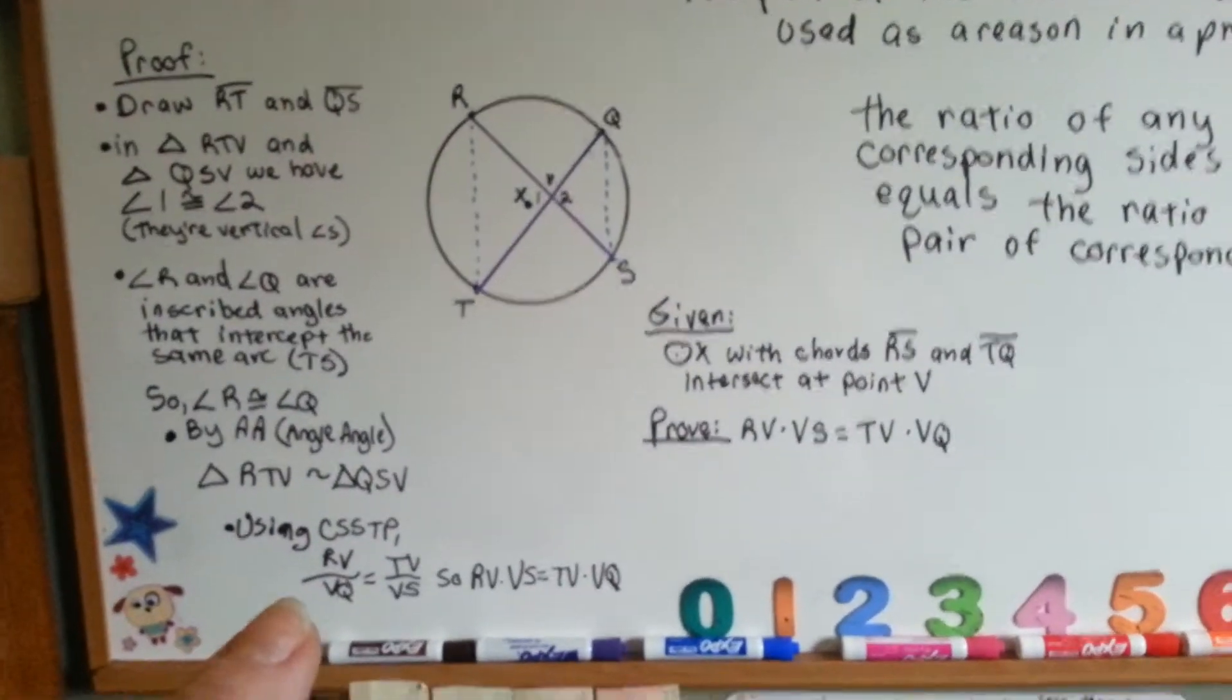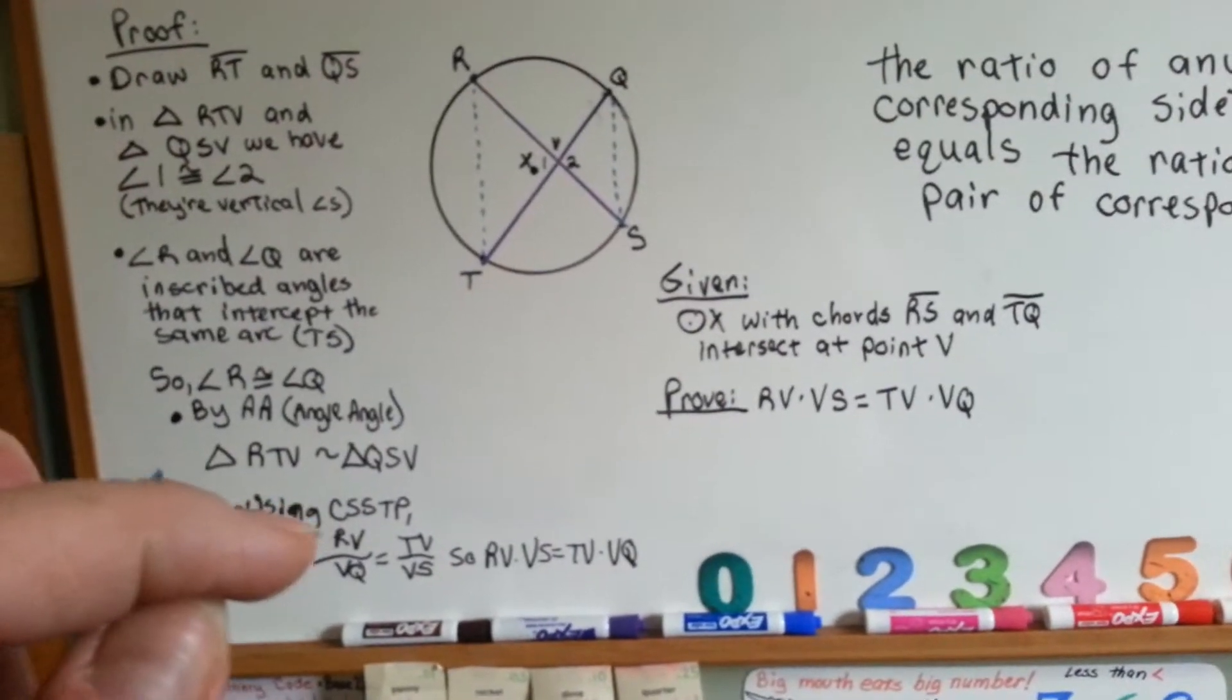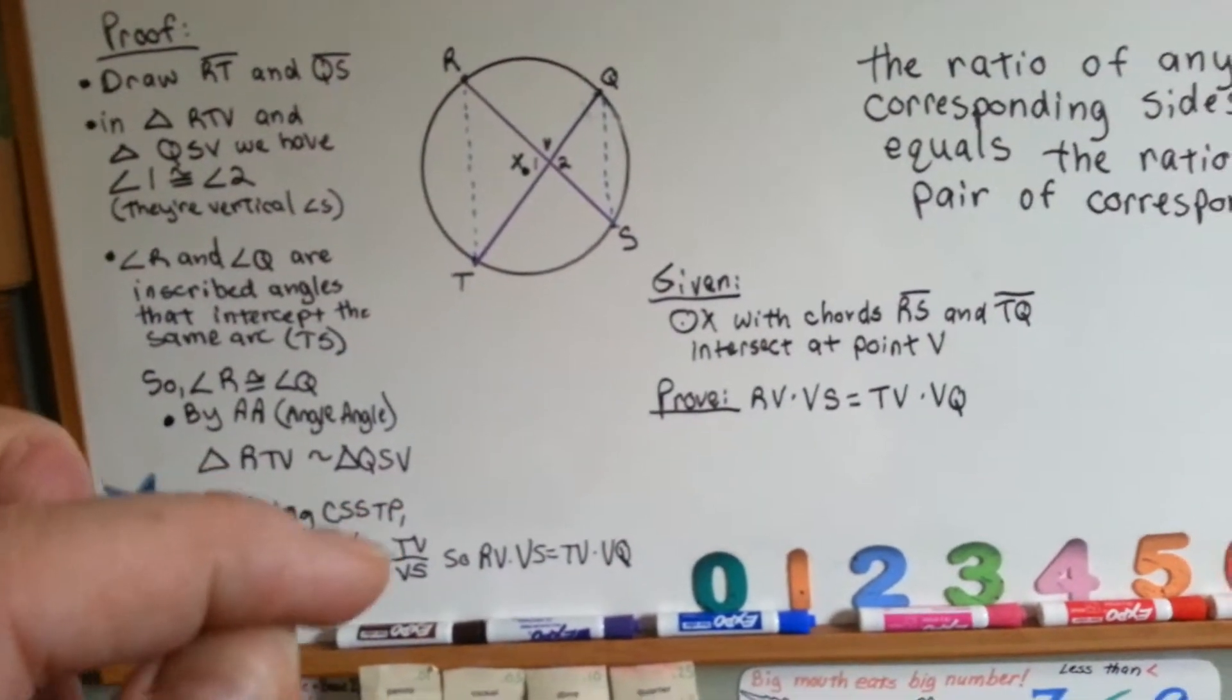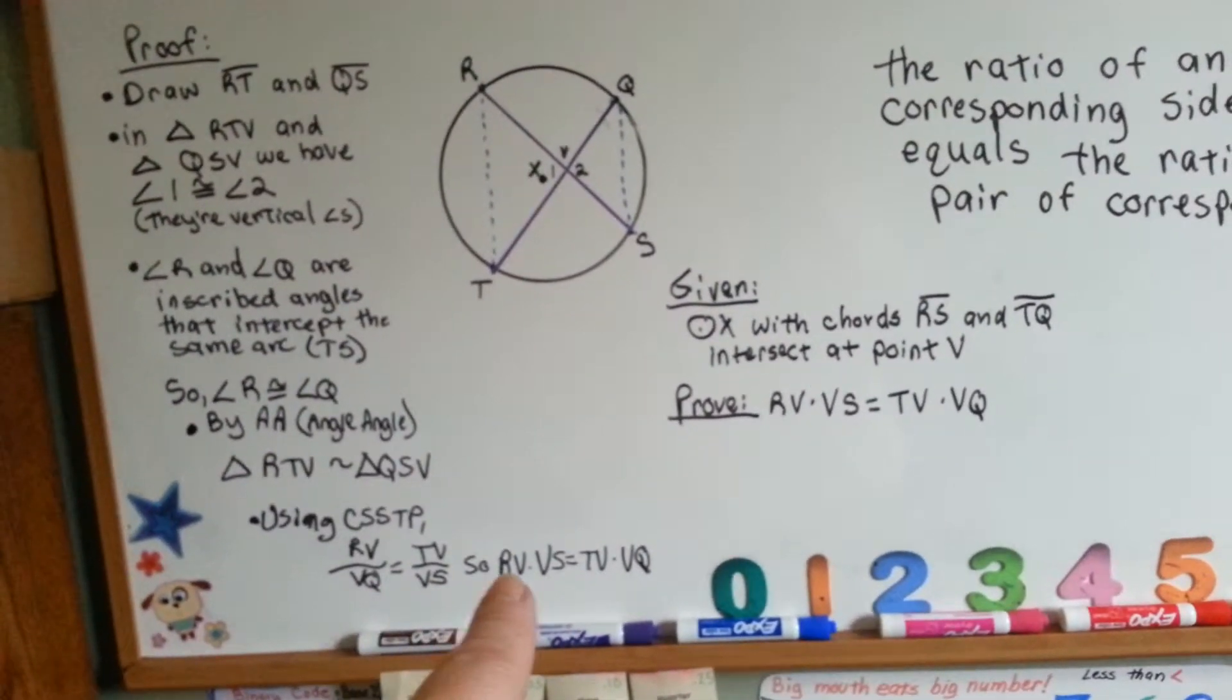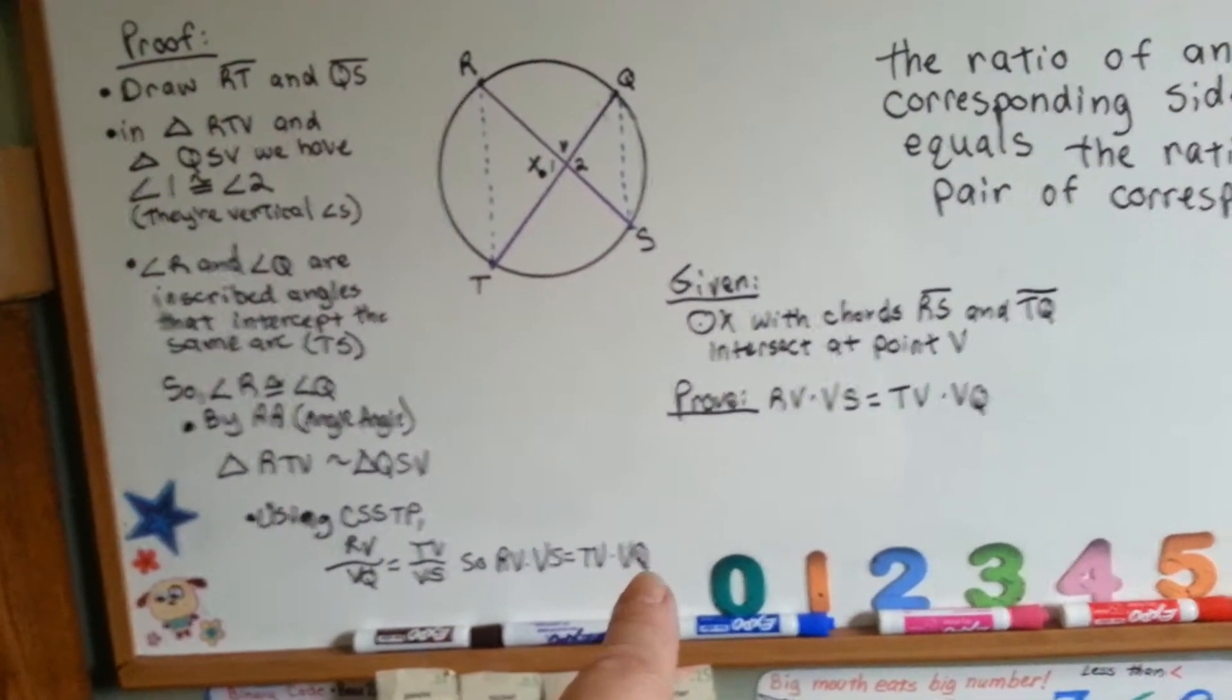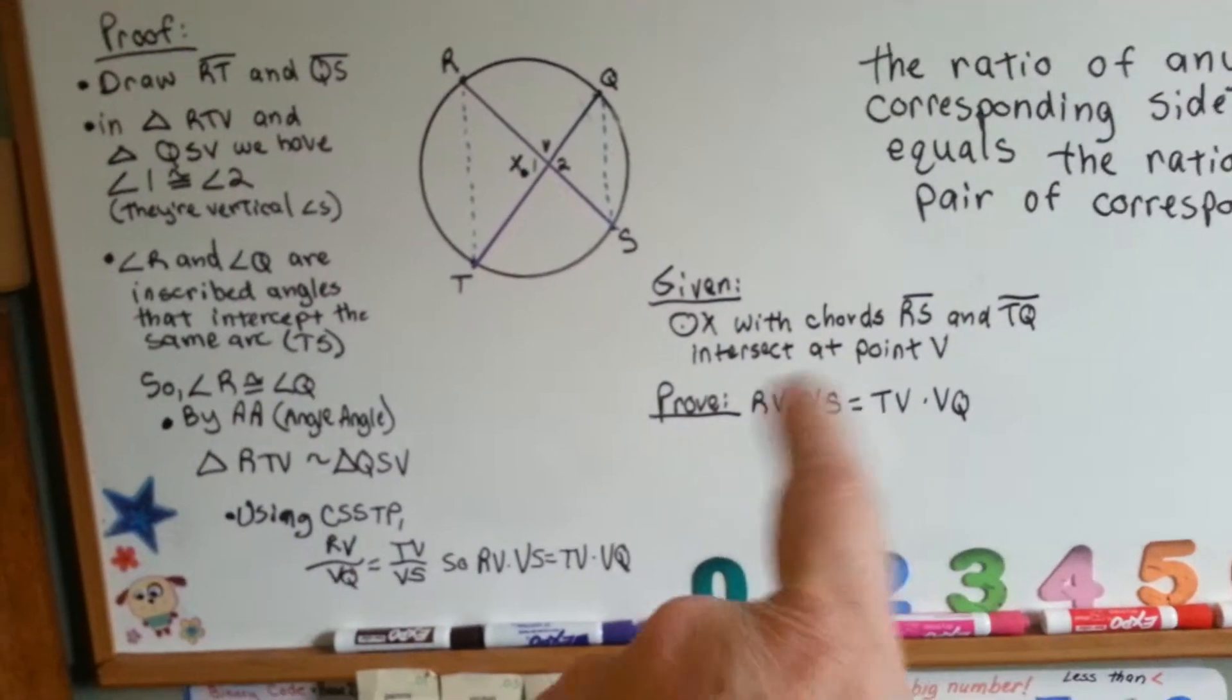We can say that RV over VQ is equal to TV over VS, which is the same thing as, if you open it up, it's RV times VS is equal to TV times VQ. So, we proved what we needed to prove.